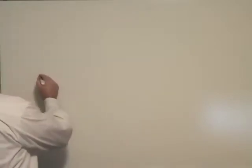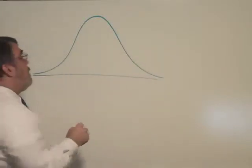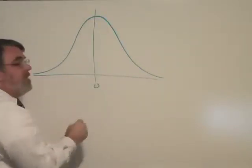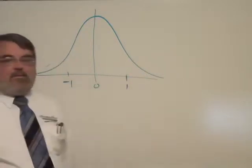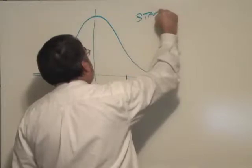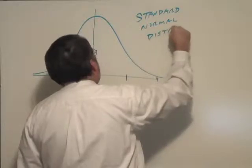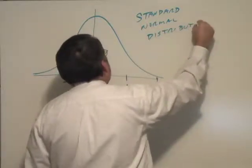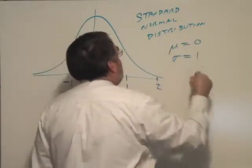So, the normal distribution is what we call the bell curve, but statisticians call it the normal distribution. Now, if you have this bell curve in which the mean is zero and the standard deviation is one, that special case is called the standard normal distribution.